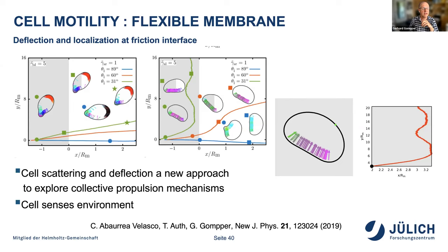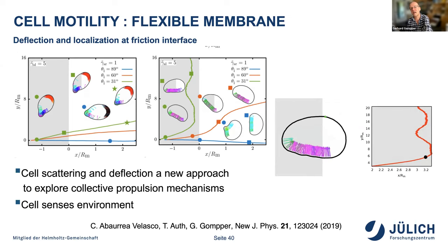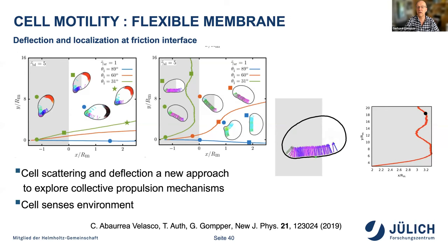We can do something similar for a friction interface, where friction with the substrate differs between two regions. The particle approaches the interface and can be captured by it. The cell reorients, and there is a tank-treading motion of the membrane because friction is lower on one side. This leads to rotational motion while the cell propagates parallel to the interface. This can also be compared with experiments.